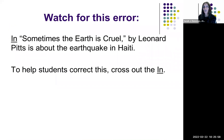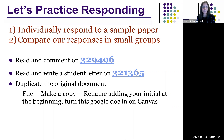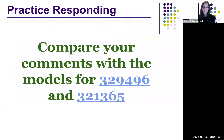One small grammar note to look for: 'Sometimes the Earth is Cruel by Leonard Pitts is about' — this construction is confusing. Help students correct it by crossing out 'is about' and writing: 'Sometimes the Earth is Cruel by Leonard Pitts, comma, is about the earthquake in Haiti.' Select the two practice essays from Canvas, copy and paste them, do marginal commentary on the first and a student letter on the second. Two examples on the slideshow show how other teachers have approached this — compare your approach to theirs. Make sure to proofread your letters; you're a role model.